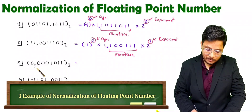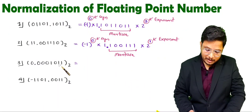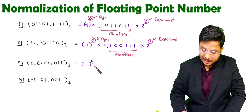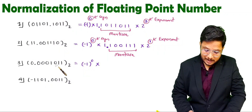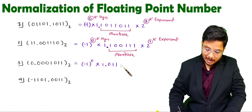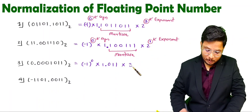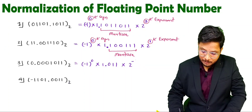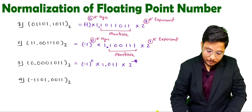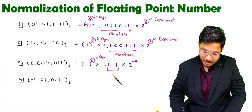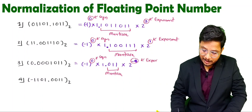Now let us solve the third question. We have 0 point 0 0 0 1 0 1 1 — this is a positive number. So for a positive number, minus 1 to the power 0 is the sign, into 1 point 0 1 1 — that is how we represent it. Now towards the right side, how many digits are we shifting? 1, 2, 3, 4 — so 2 to the power minus 4 is the exponent. So 0 is the sign, 0 1 1 is the mantissa, and minus 4 is the exponent.